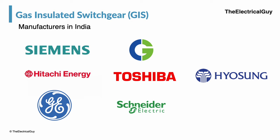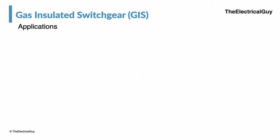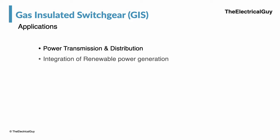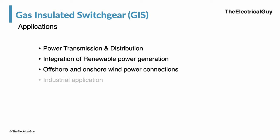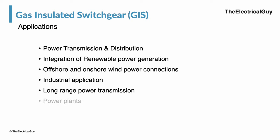GIS has a wide variety of applications. It can be used in power transmission and distribution, integration of renewable power generation, offshore or onshore wind power connections, industrial applications, long range power transmission, and even in power plants.